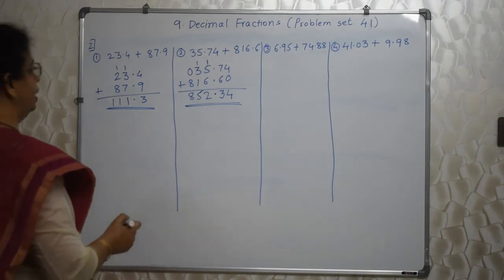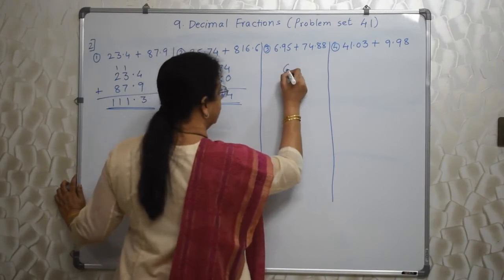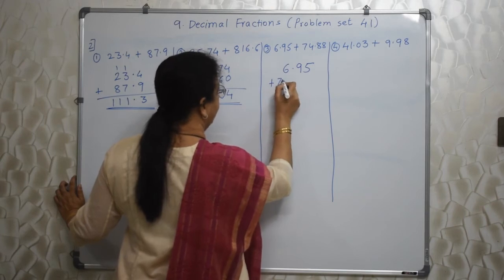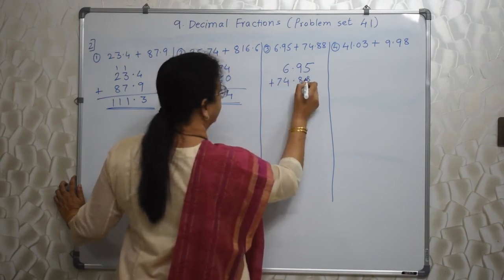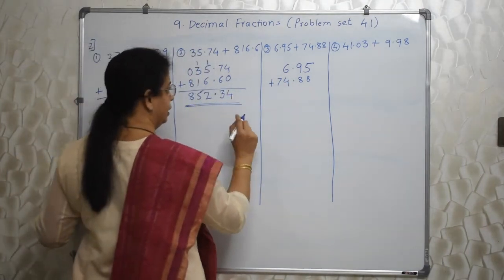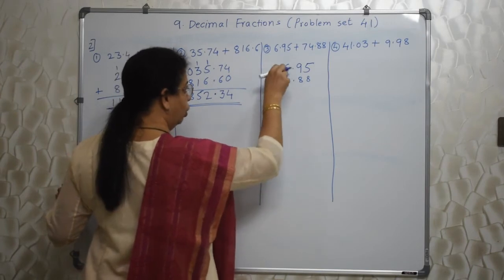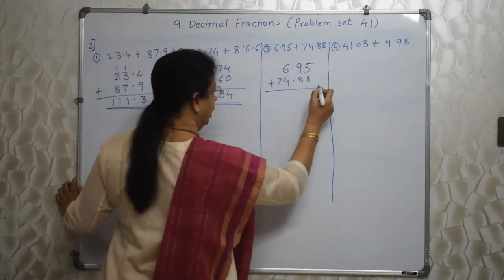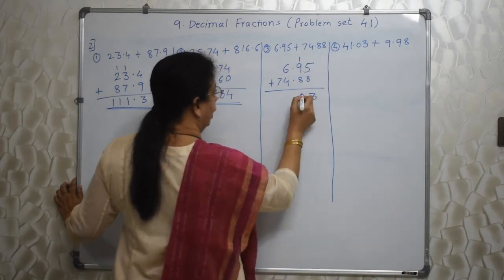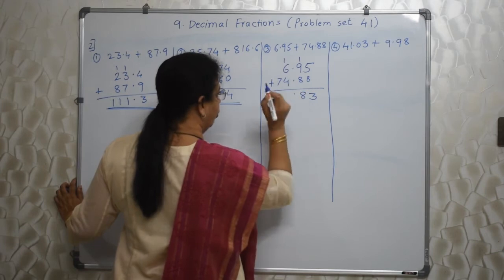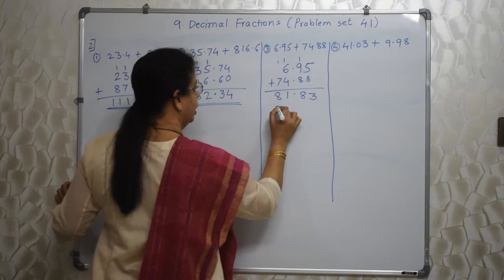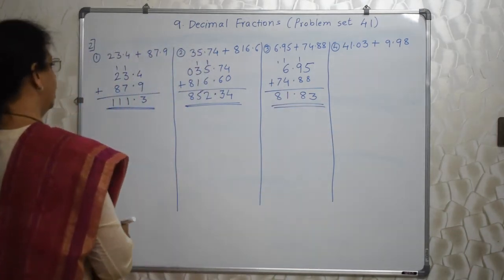Addition is very easy. Only thing is kaise likhna ho. 6.95 plus 74.88. 7 mein 6 ke niche nahi le sakti — 7 is in 10's place, 6 and 4 are in 1's place, so wo ek doosre ke niche aane chahiye. So 5 plus 8, 13. 1 carry. Point ke niche point — decimal aa gaya. So this is 11 and 8. 81.83 is the answer.